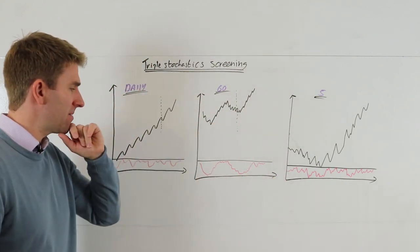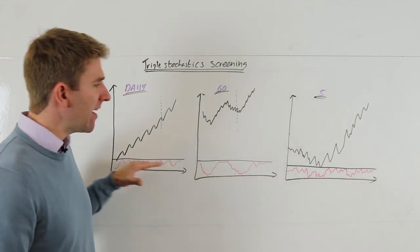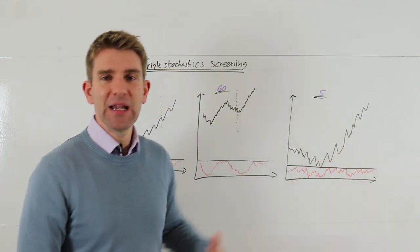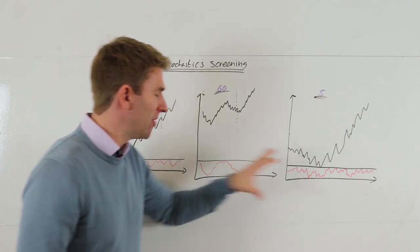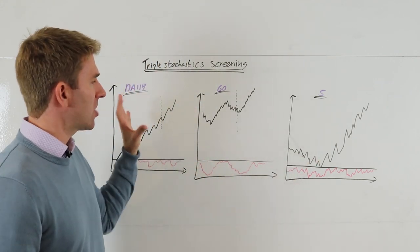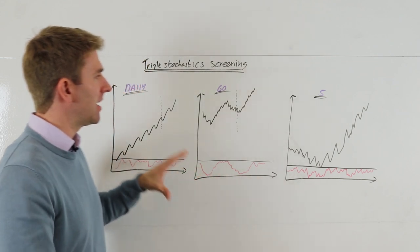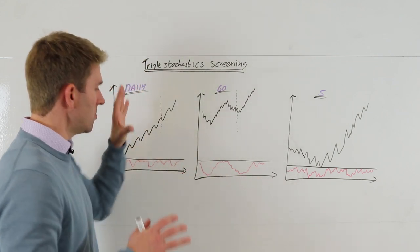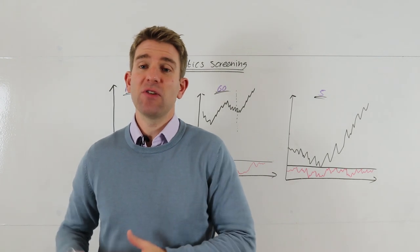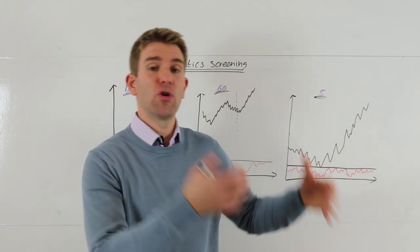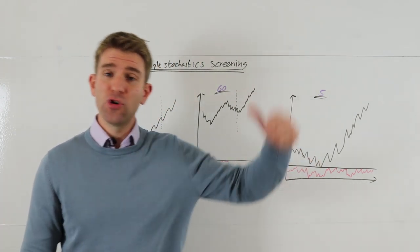But again, how long do you sit through, how do you quantify where you come out if it's wrong? Very challenging. All right, so this is the triple stochastic method. So on the bottom here we've got a stochastic, and again, give me a little bit of leeway for my drawing skills, but I think it's good to illustrate it here and kind of see what we want to see.